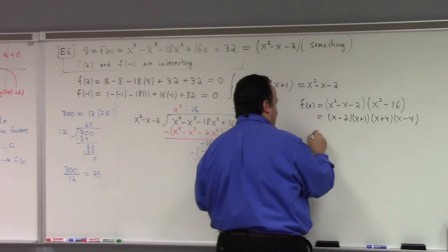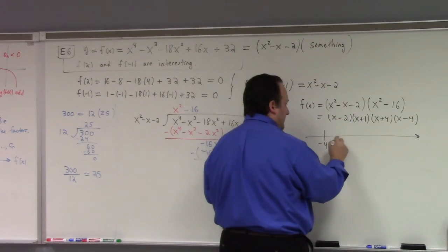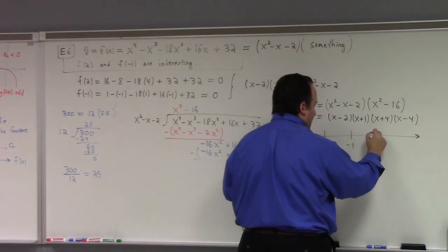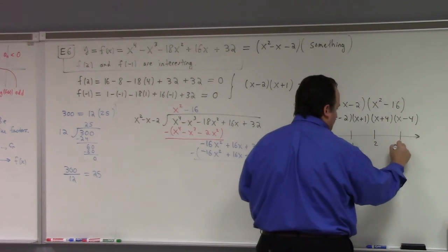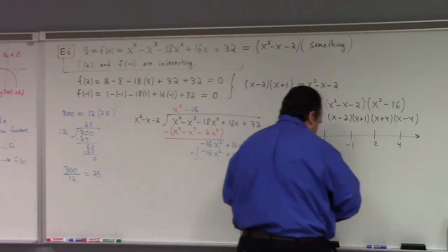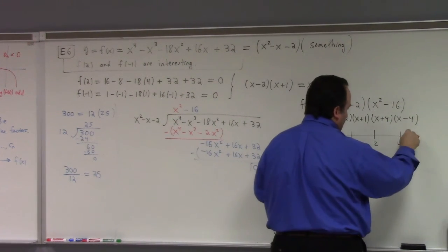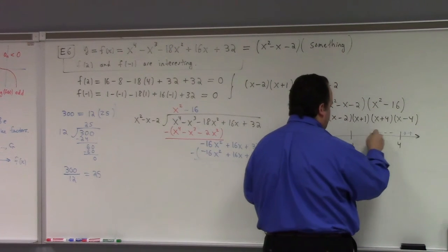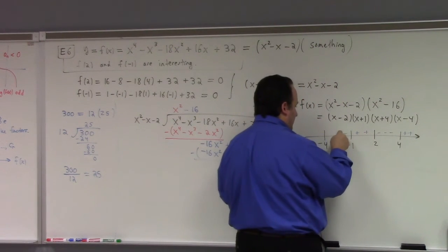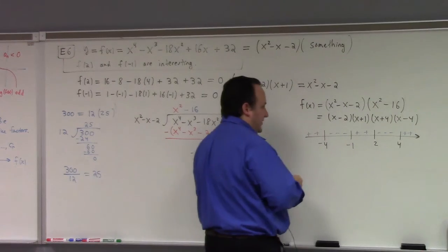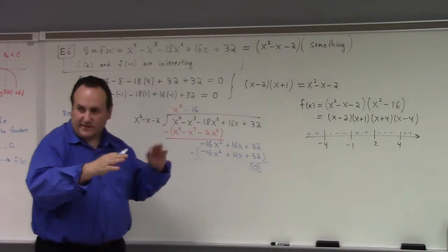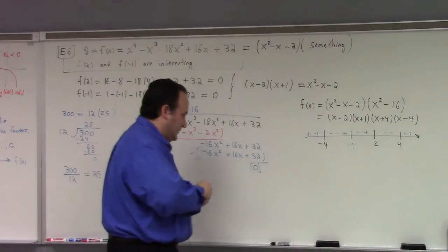So, our x intercepts, we've got a minus 4, we've got a minus 1, we've got a 2, we've got a 4. I put my pluses in, I put my minuses in, plus, minus, plus, it flips every sign, because every power is odd, it's all crossings, there's no bouncing in this one.